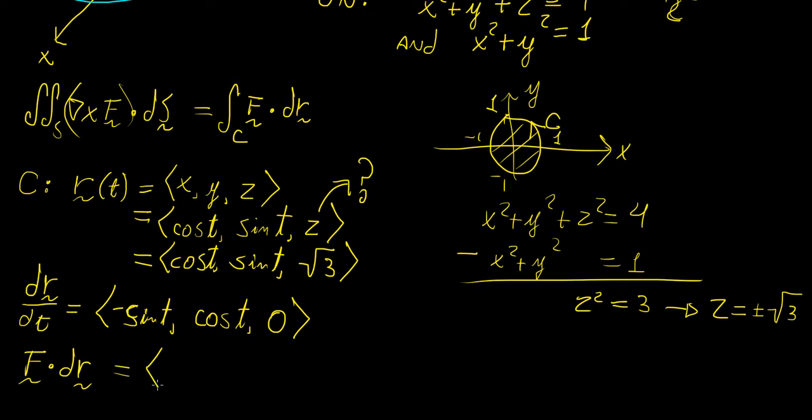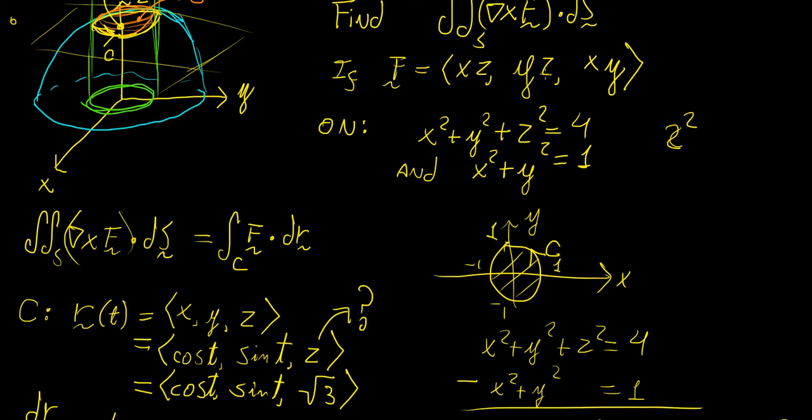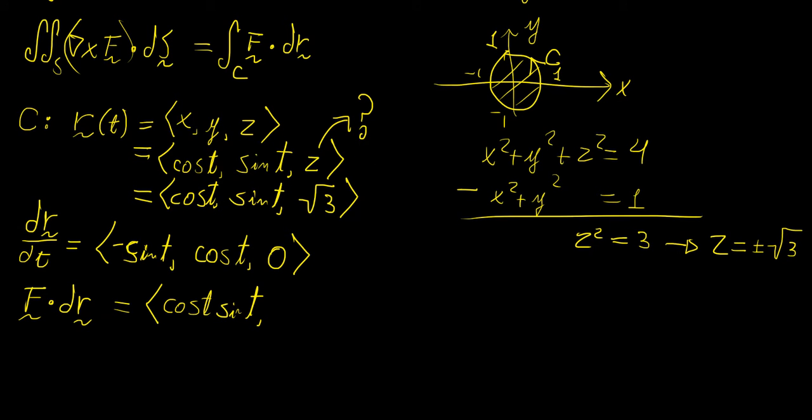So the first component of this is going to be x, y, so that means this is going to be cosine t times sine t. The second component is going to be y, actually, that's x, z, so my apologies for that. x, z, that's going to be square root 3 times cosine of t.